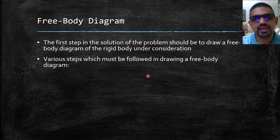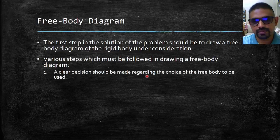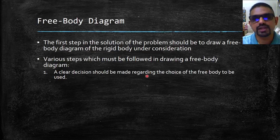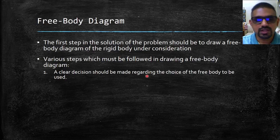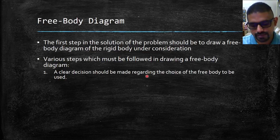Let us summarize the various steps which must be followed in drawing a free body diagram. Step one: a clear decision should be made regarding the choice of the free body to be used. This body is then detached from the ground and separated from all other bodies, and the contour of the isolated body is sketched.